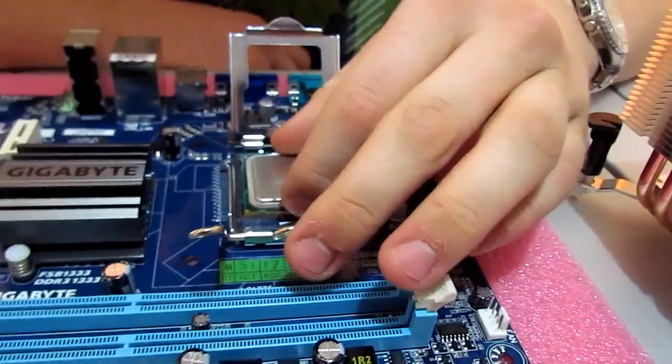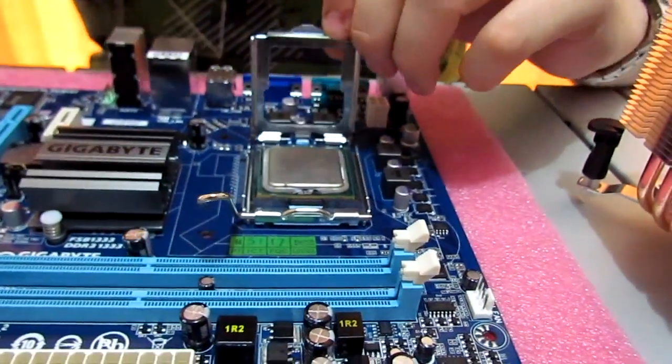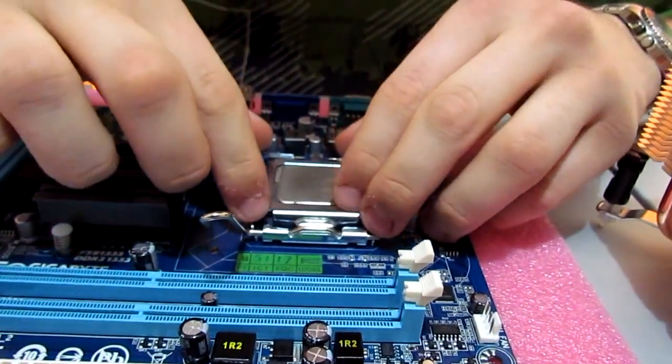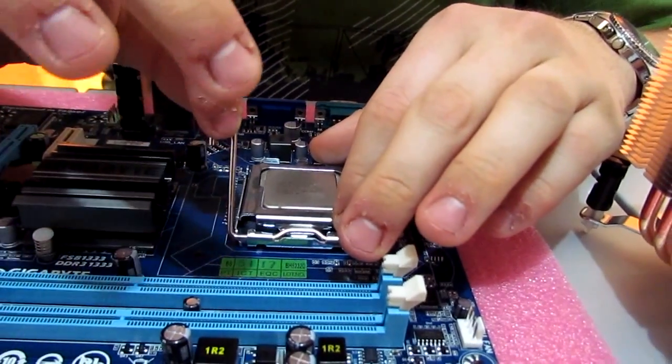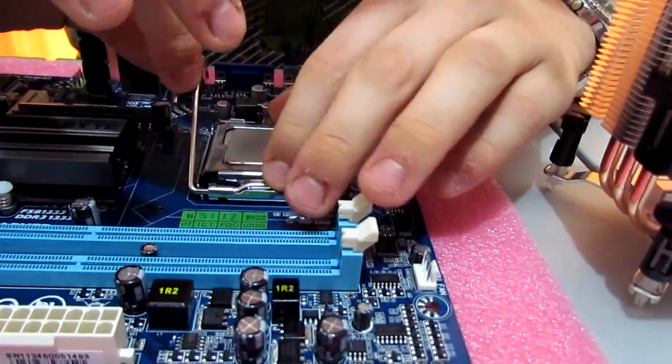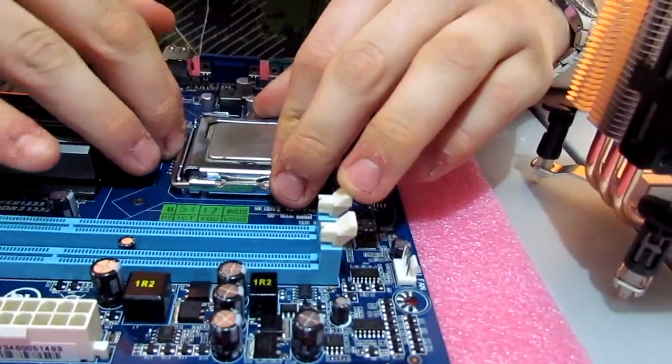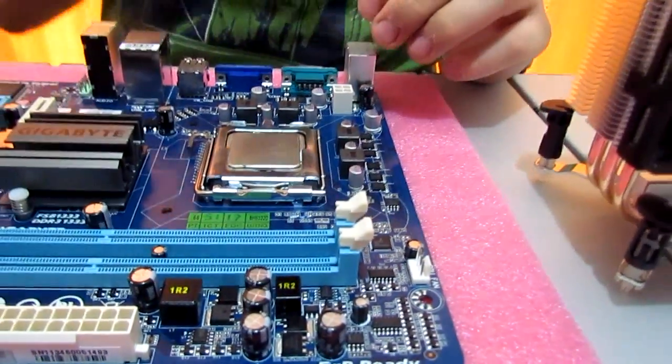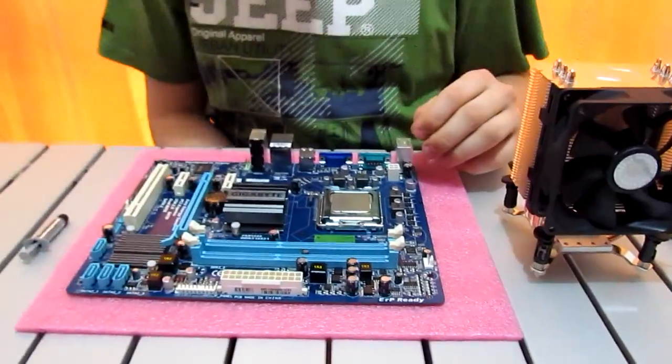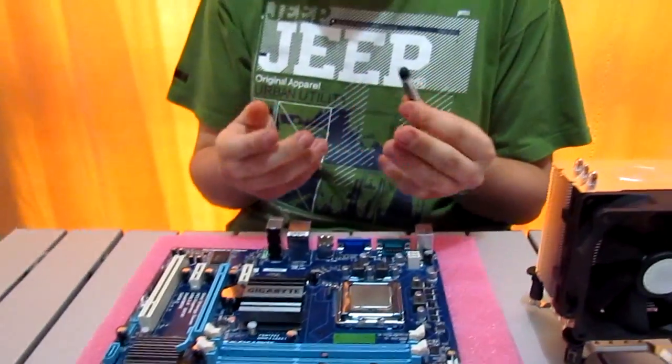It's not moving anywhere. That's good. So now we close up the little plate. It just slips through it. Then the handle comes over and down and clips under the little tag there. So now our CPU is in place. We can actually start applying thermal paste.